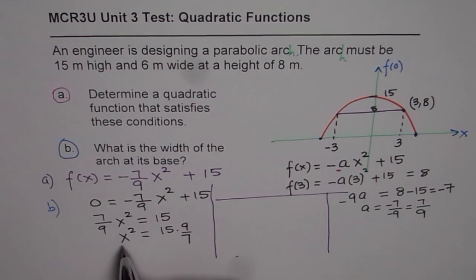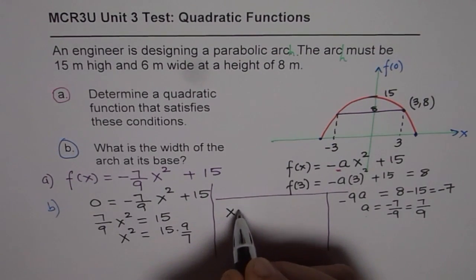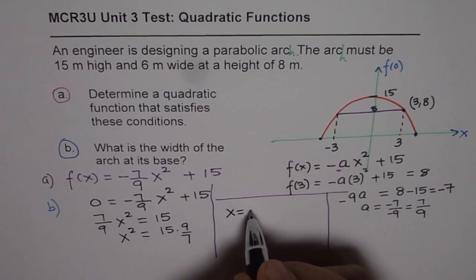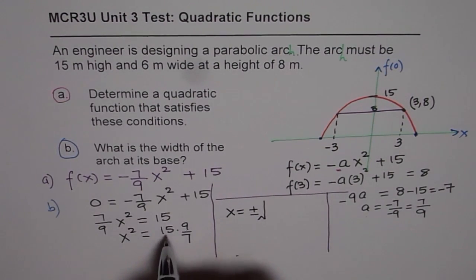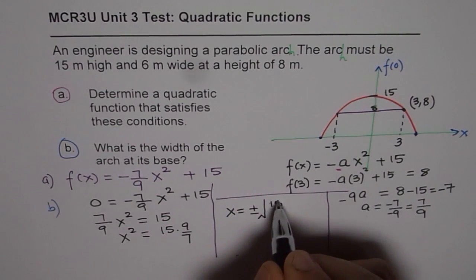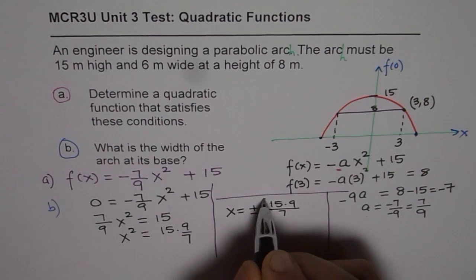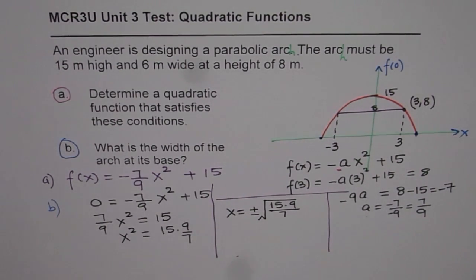Now I am just making some room to solve the rest of the question here in this box. So from here we can write what x is. x = ± √(15 × 9/7).